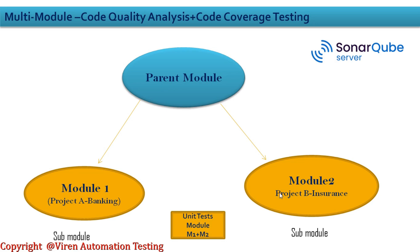We are going to write unit test cases for module one and module two. This is the third module, created only for testing — we call it the unit test module. In this unit test module we write unit test cases related to module A and module B. The unit test module only has unit test cases related to the banking project (project A) and the insurance project (project B). Now how can we get the report when we build the parent module?